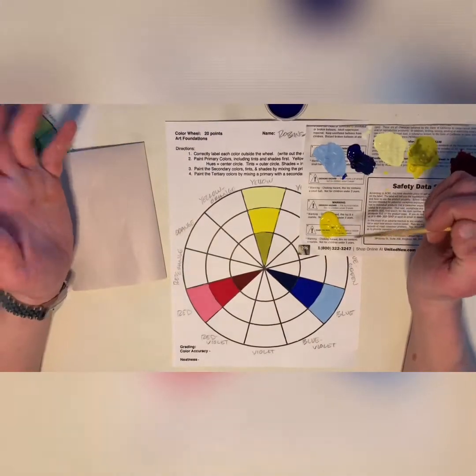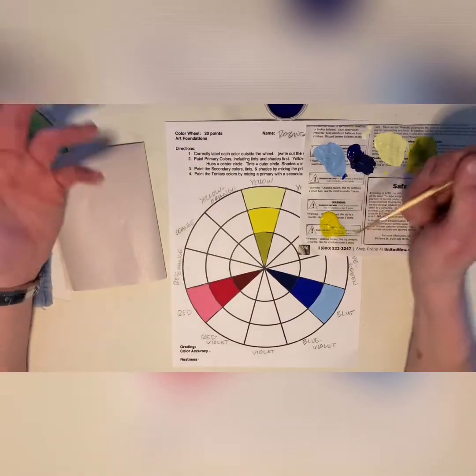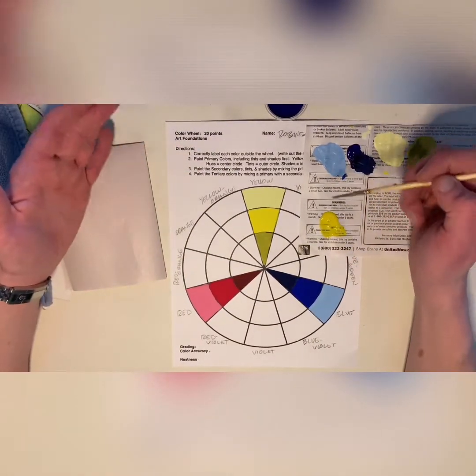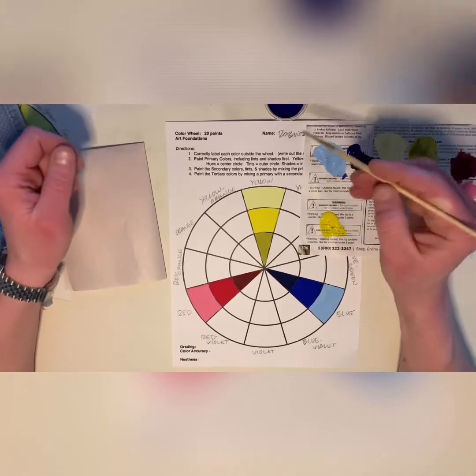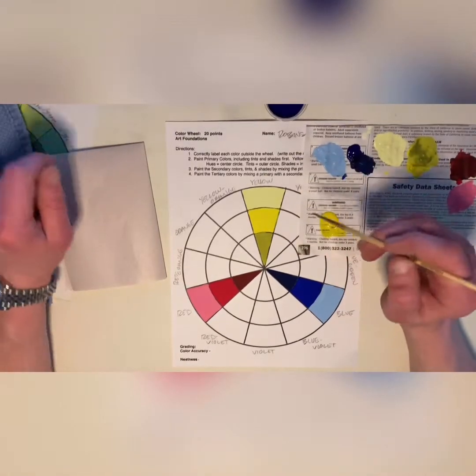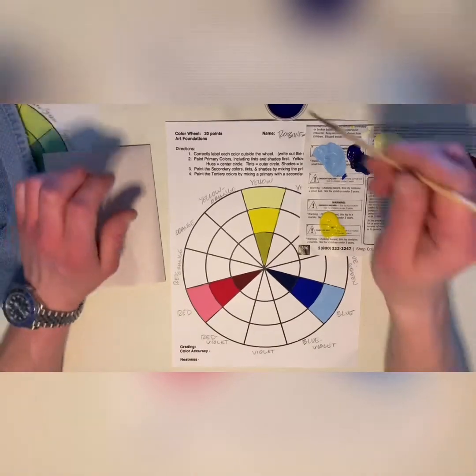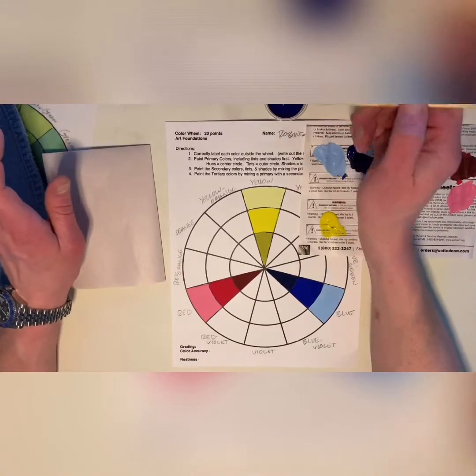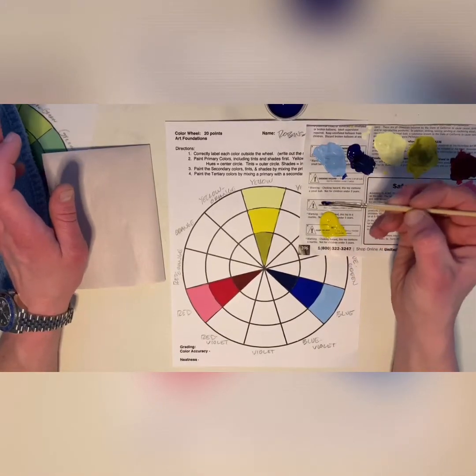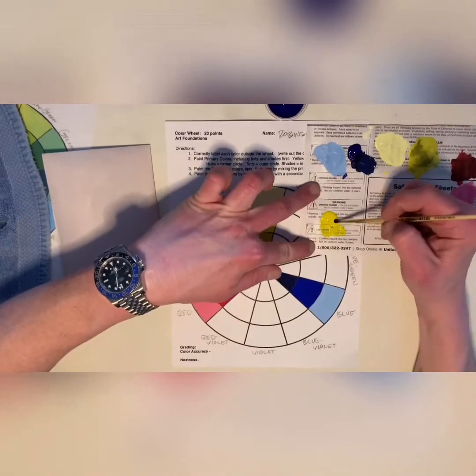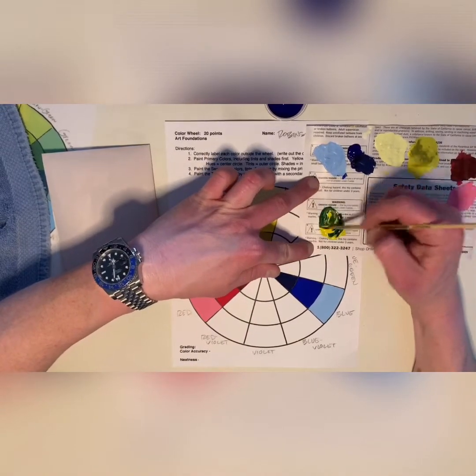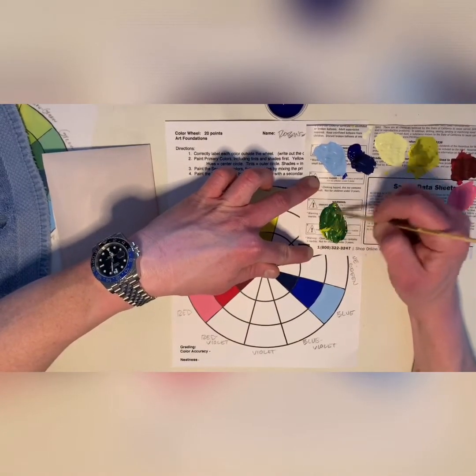But, blue is significantly heavier in tone, or it's significantly darker than my yellow. So, I don't want to take a full brush load of that blue and add it in. I'm going to dip just a very small amount. I've got about a half a brush worth, and I'm going to take and mix that straight in to the yellow that's already on my page.